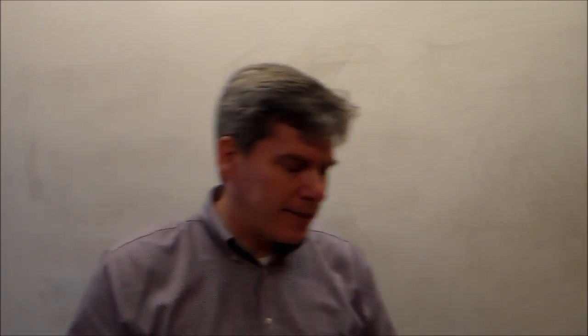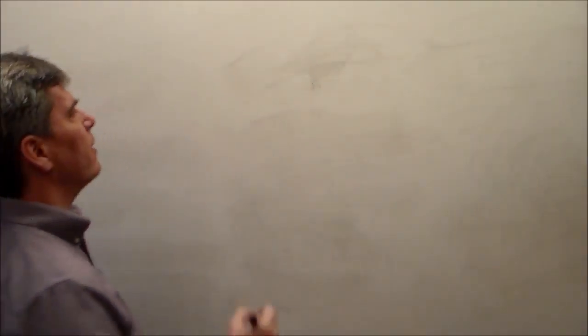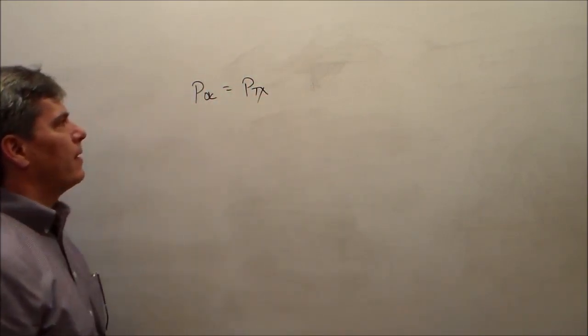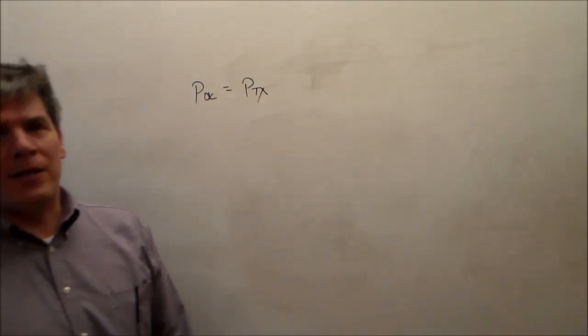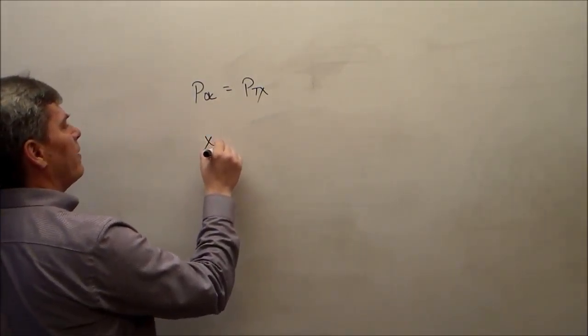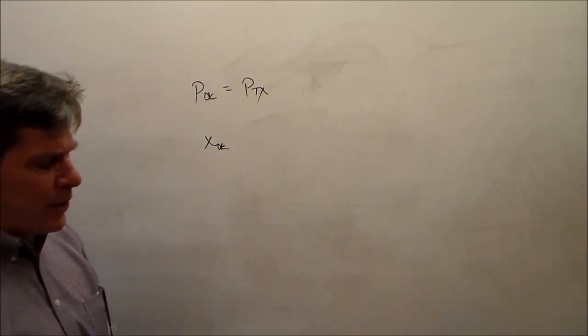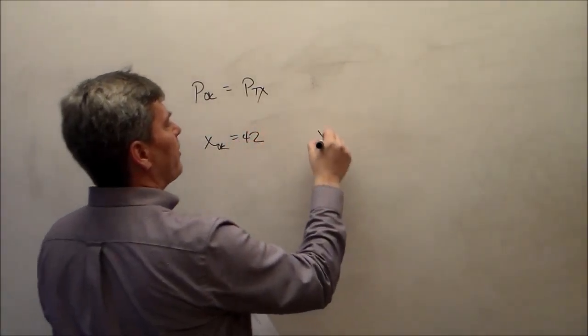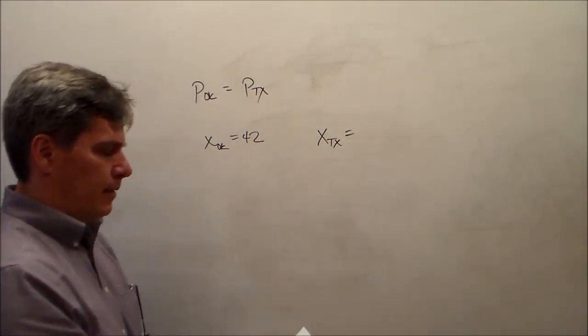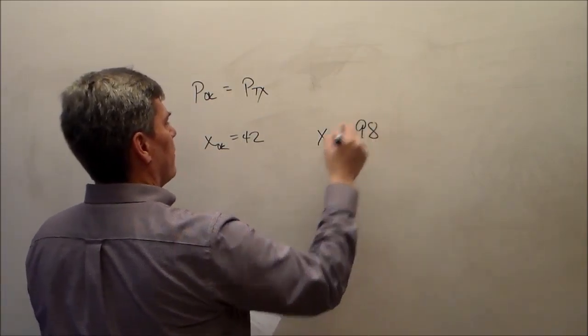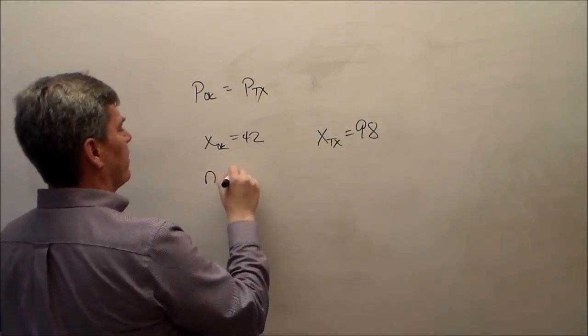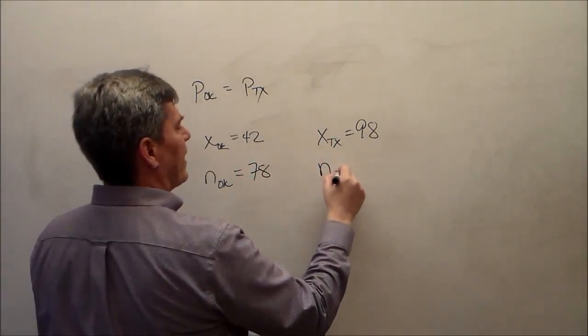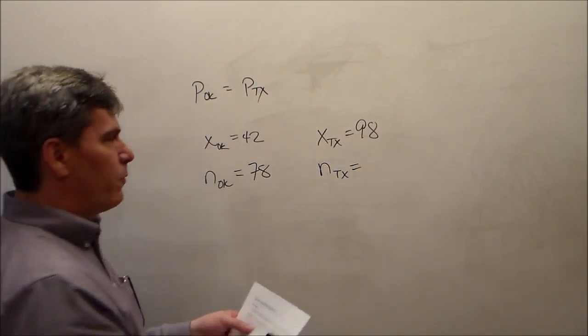Problem number one, we're asked to test the hypothesis that the population proportion for Oklahoma is equal to the population proportion for Texas. Two proportions, try to compare them. Information that we're given is that the number of successes in Oklahoma is 42, the number of successes in Texas is 98, sample size in Oklahoma is 78, and the sample size in Texas is 143.